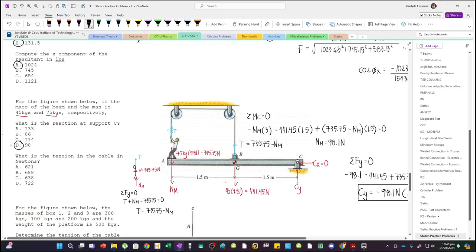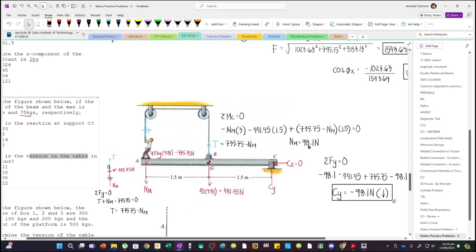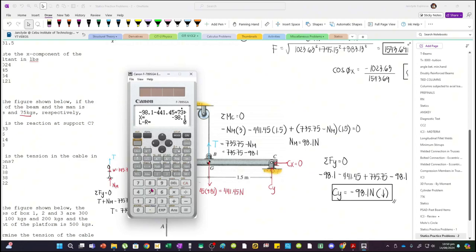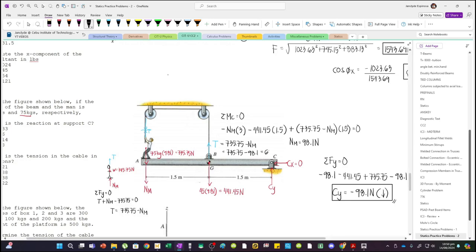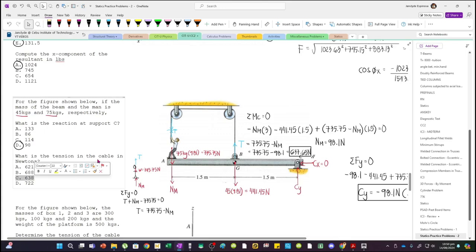Now the next question is what is the tension in the cable in Newtons? Let's solve T since we know NM. T is 735.75 minus 98.1, we have 637.65 Newtons. So the answer is letter C.